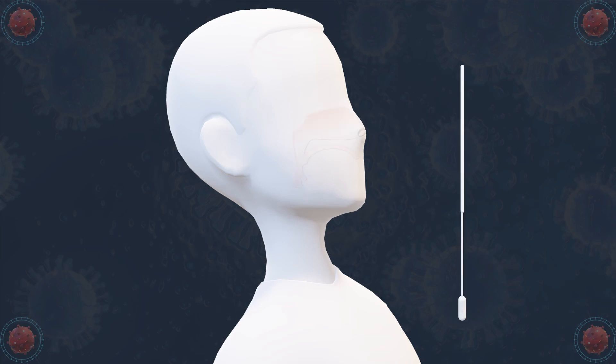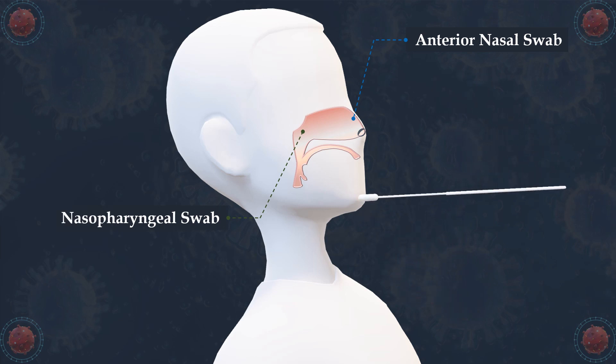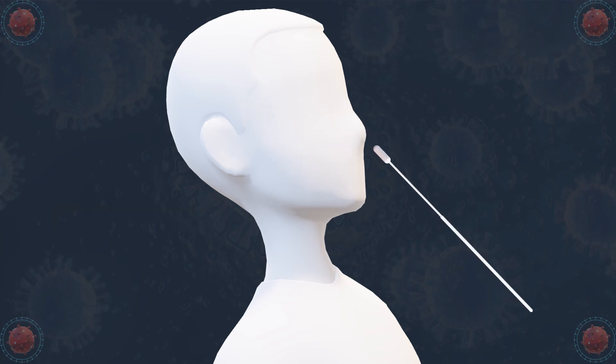The qualitative detection of the nucleocapsid protein antigen can be performed with an anterior nasal swab or a nasopharyngeal swab. The swab is inserted into the nostril of the patient and slowly rotated three to five times against the nasal wall to collect secretions that contain the nucleocapsid protein.